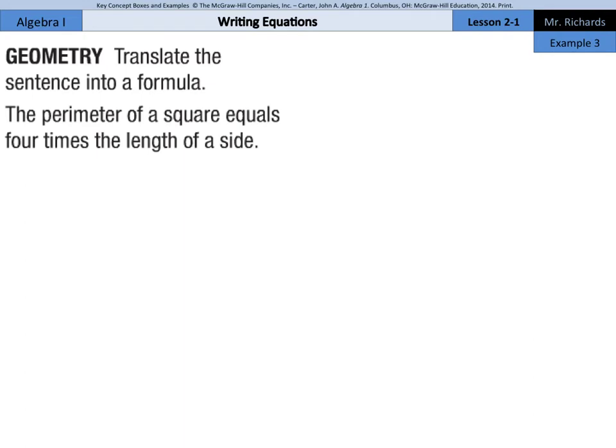In example 3, we're going to write a formula by translating a sentence. Translate the sentence into a formula. The perimeter of a square equals 4 times the length of a side. Alright, well, perimeter can be P equals 4 times the length of a side. Well, 4 times, and for the length of a side, we can say S. So, P equals 4 times S.